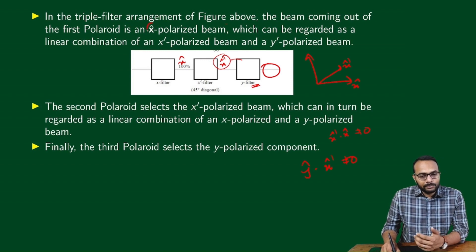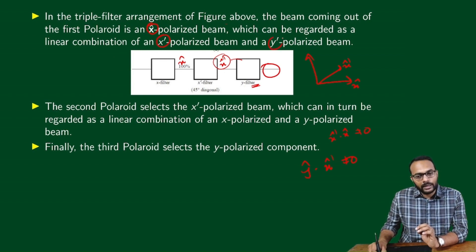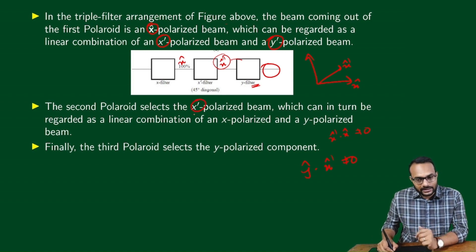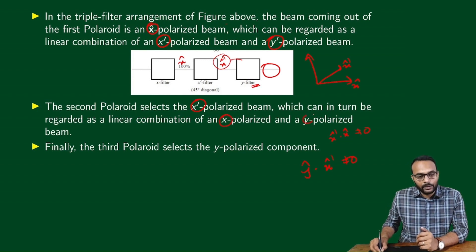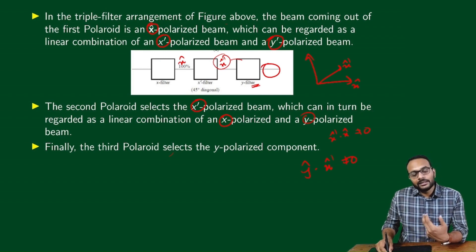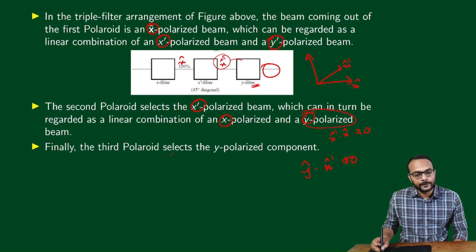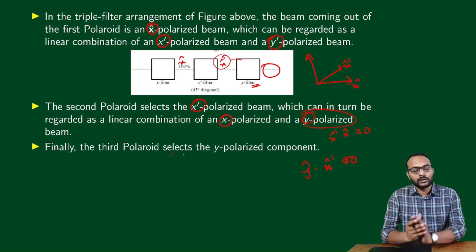The beam coming out of the first polaroid is X-polarized, which can be regarded as a linear combination of an X'-polarized and a Y'-polarized beam. The second polaroid selects the X'-polarized beam, which can in turn be written as a combination of X-polarized and Y-polarized beams. The third polaroid selects the Y-polarized component. This is how polaroids and polarization behavior in the triple filter arrangement is described.